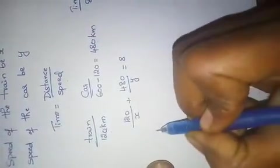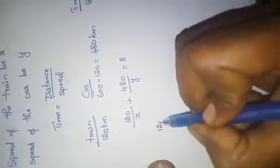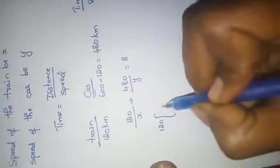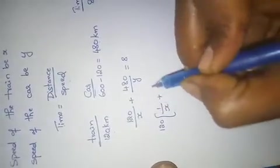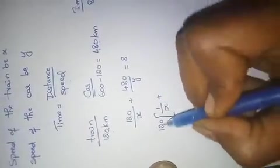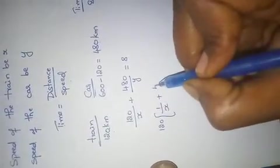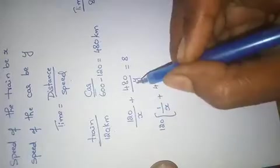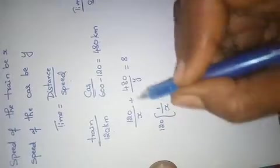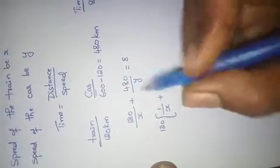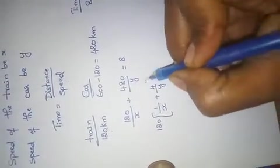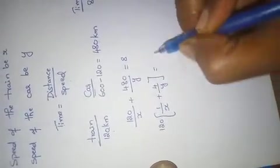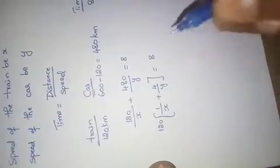Taking 120 as a common factor: 1/x + 4/y, which simplifies to give us 1/x + 4/y = 8.